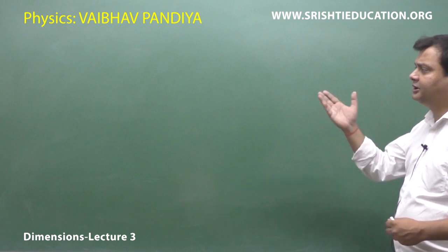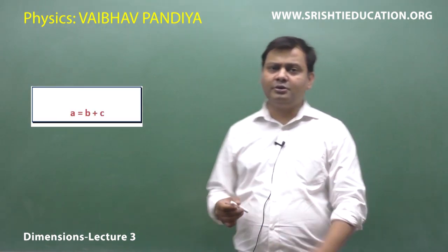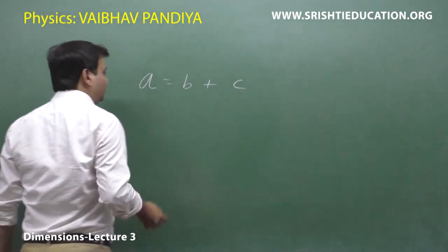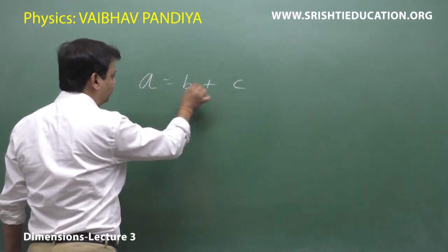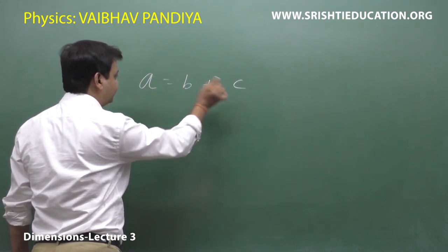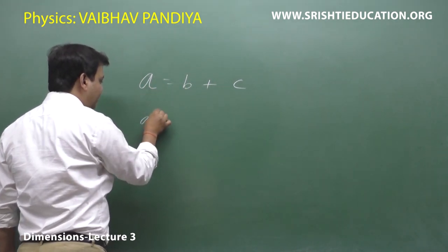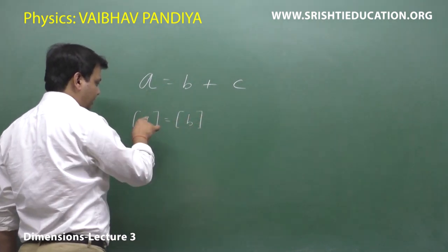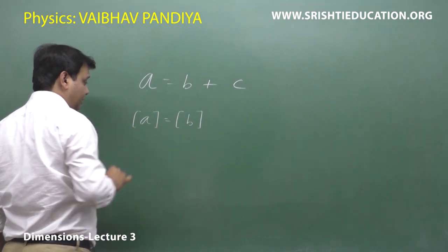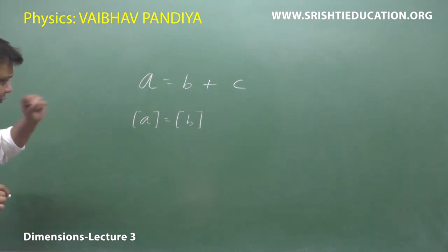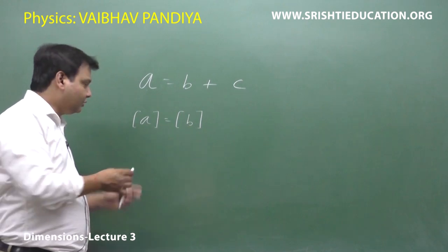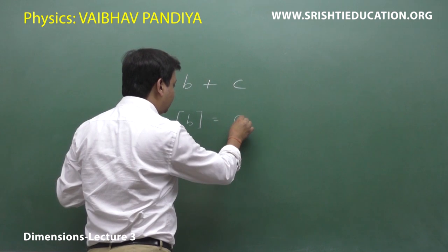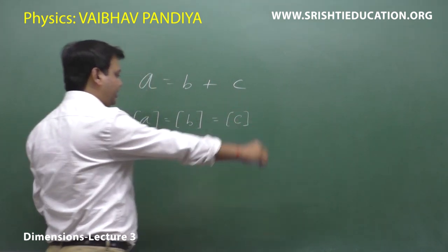Suppose you are given a equals b plus c. There are basically three terms: a, b, and c. The dimensional formula of a will be the same as the dimensional formula of b, and the same as the dimensional formula of c. The square bracket notation denotes the dimensional formula.